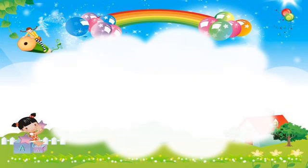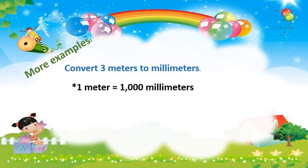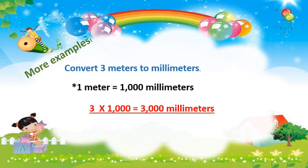Let's have more examples before we proceed to the guided practice. Convert 3 meters to millimeters. Remember that 1 meter equals 1,000 millimeters. So we multiply 3 times 1,000, which equals 3,000 millimeters.